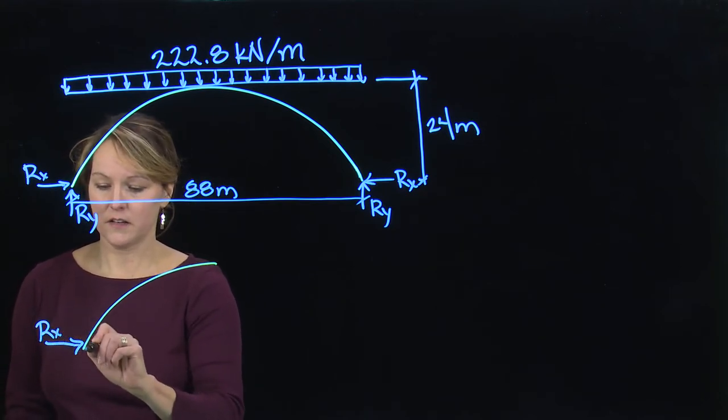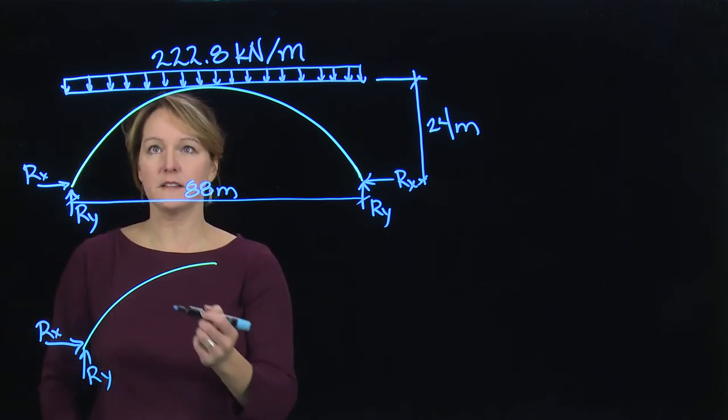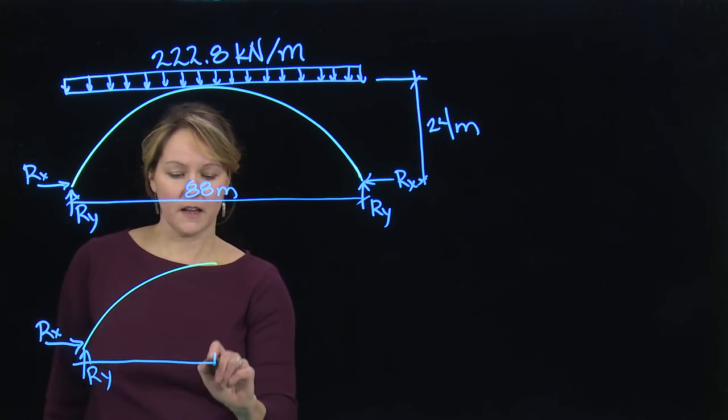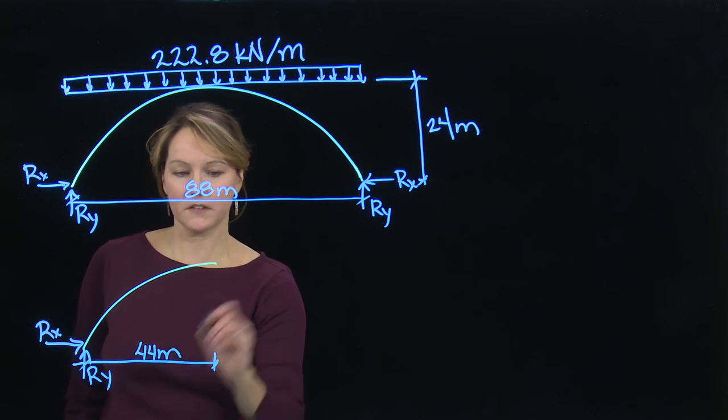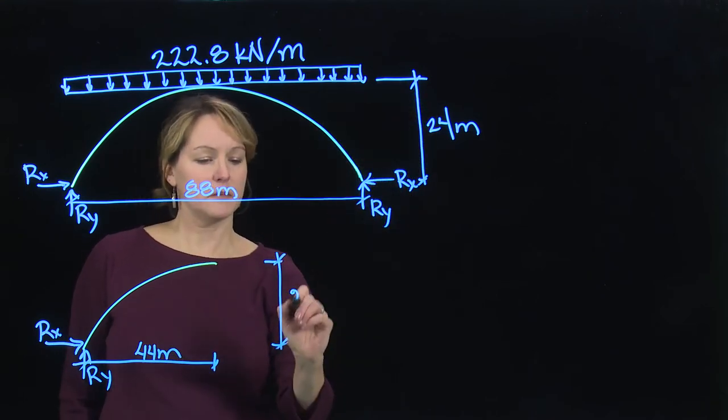I have R horizontal and R sub Y—these are just my support forces holding it in place at the base. I'm cutting it at the halfway point, so my width will now be 44 meters. And my height, I'm right at the middle, so it's my 24 meters.